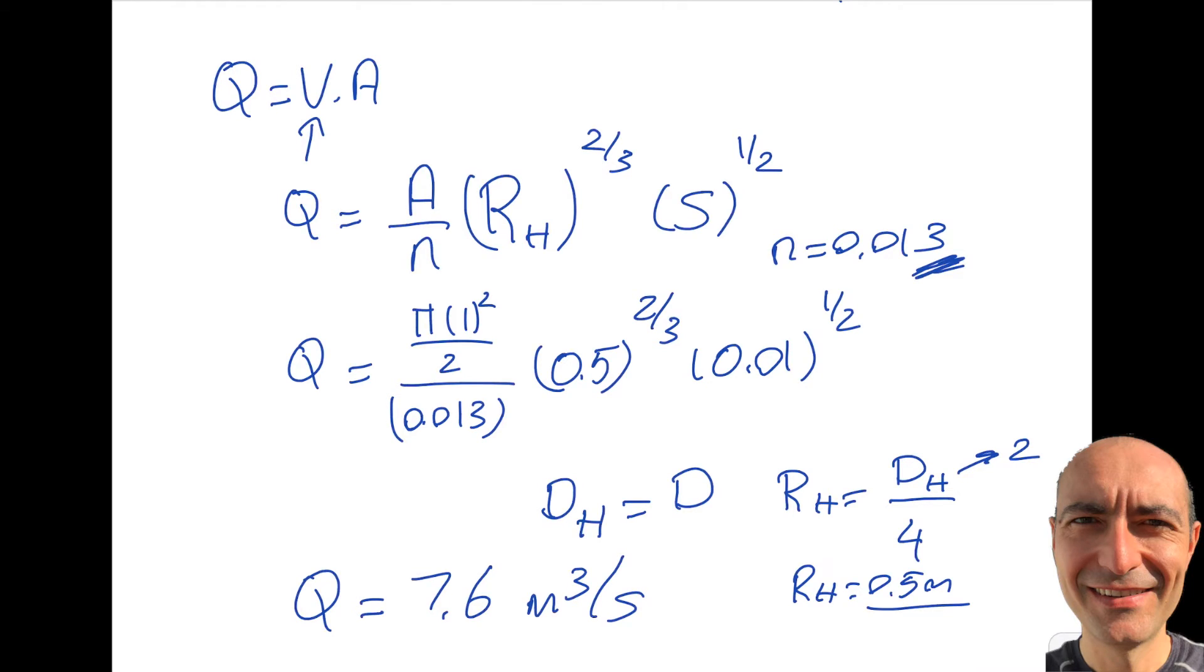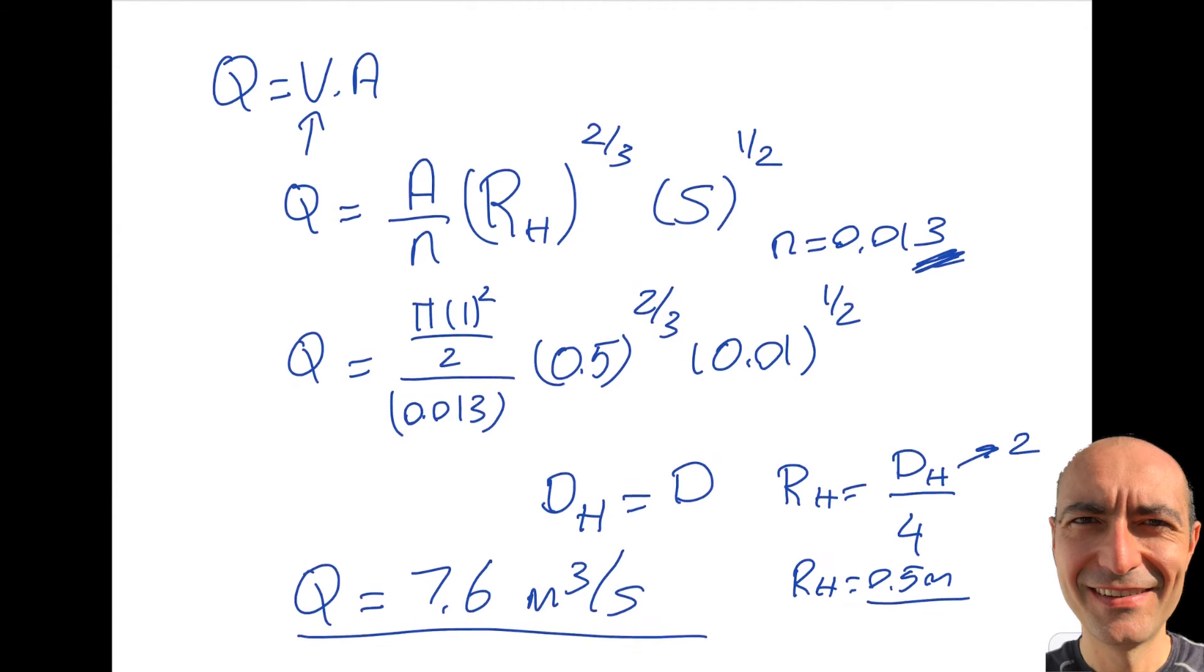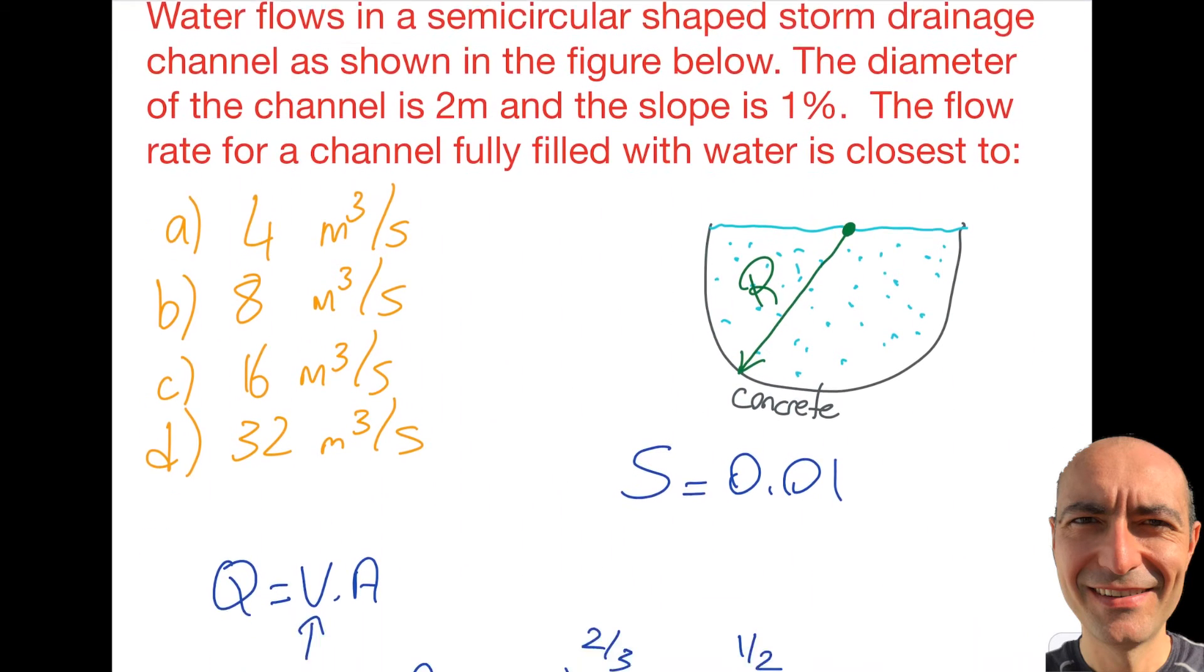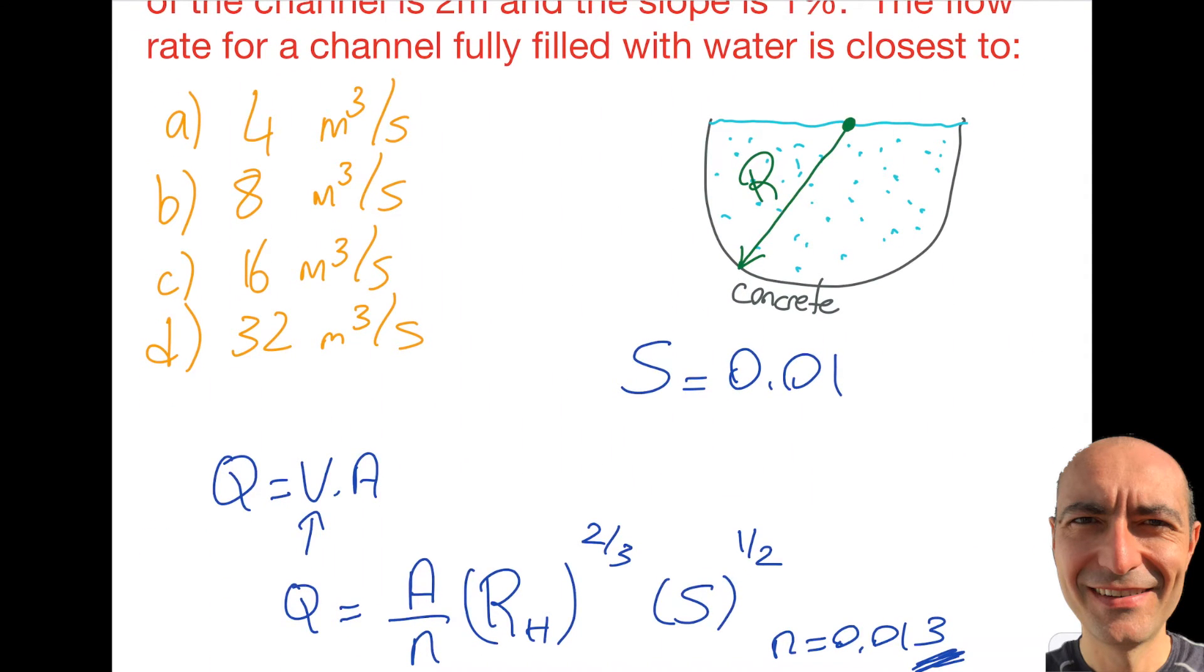As you can see, this is a fairly large number because it's per second. Every second there will be 7.6 m³ of water flowing in this drainage channel. I'm kind of done, but I'm going to do the other approach just to illustrate. If you want to stop watching, this is the answer as you see here, the B.